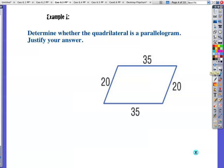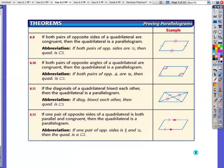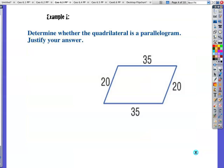All right, example one. Determine whether the quadrilateral is a parallelogram and justify your answer. Well, opposite sides are congruent. So if I look at both pairs of opposite sides are congruent, then your quadrilateral is a parallelogram.